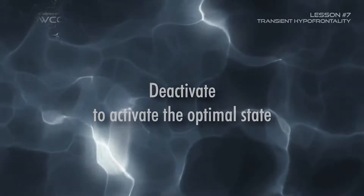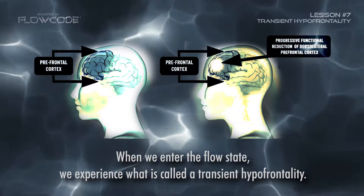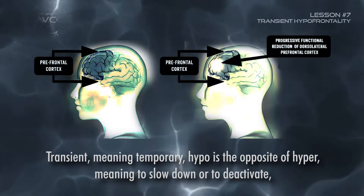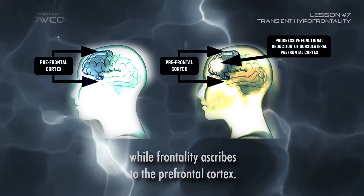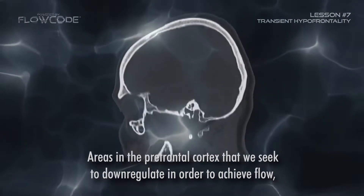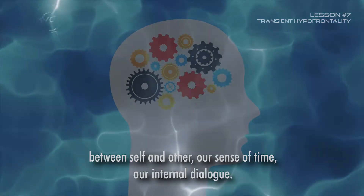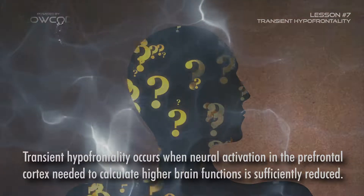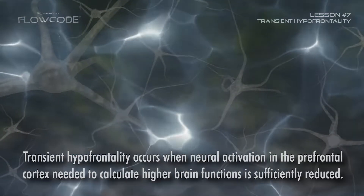When we enter the flow state, we experience what is called transient hypofrontality. 'Transient' meaning temporary; 'hypo' is the opposite of hyper, meaning to slow down or deactivate; while 'frontality' ascribes to the prefrontal cortex. The areas in the prefrontal cortex that we seek to down-regulate are the seats of higher cognitive processing — where we distinguish the difference between self and other, our sense of time, and our internal dialogue. Transient hypofrontality occurs when neural activation in the prefrontal cortex needed to calculate higher brain functions is sufficiently reduced.